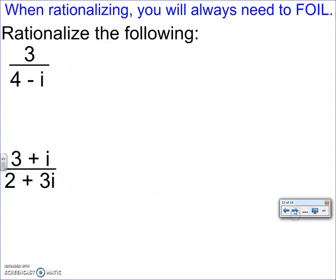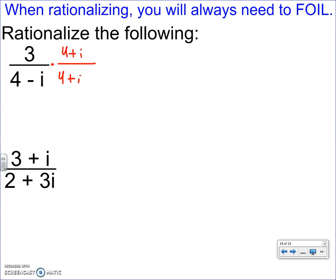So here's me doing two problems. So this is rationalize the following. So I cannot be in the denominator, so I'm going to multiply this by the conjugate. The conjugate here is going to be 4 plus I. If it helps you put parentheses, you can.